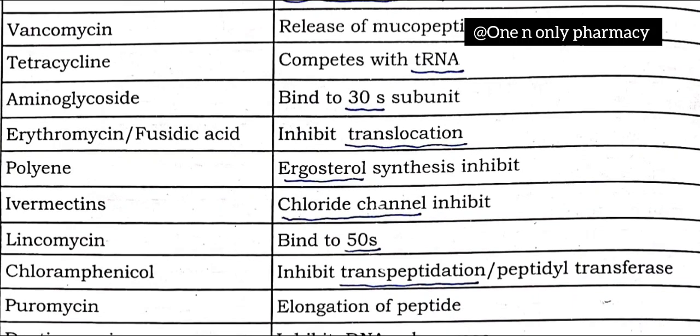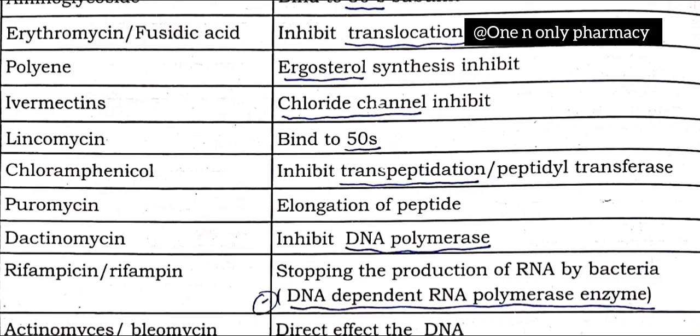Polyene antibiotics are ergosterol synthesis inhibitors — they inhibit ergosterol synthesis in microorganisms like fungi and bacteria. Chloride channel inhibitors inhibit the chloride channel. Lincomycin binds to the 50S ribosomal subunit.